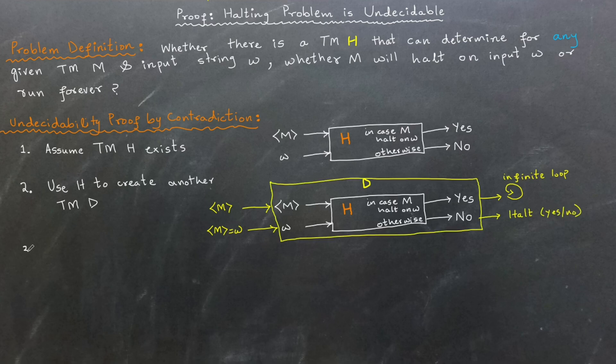This is where the contradiction arises. What happens if we feed D its own description as input? Think about it. If H says D halts, then D loops forever. Therefore, H's answer was incorrect.